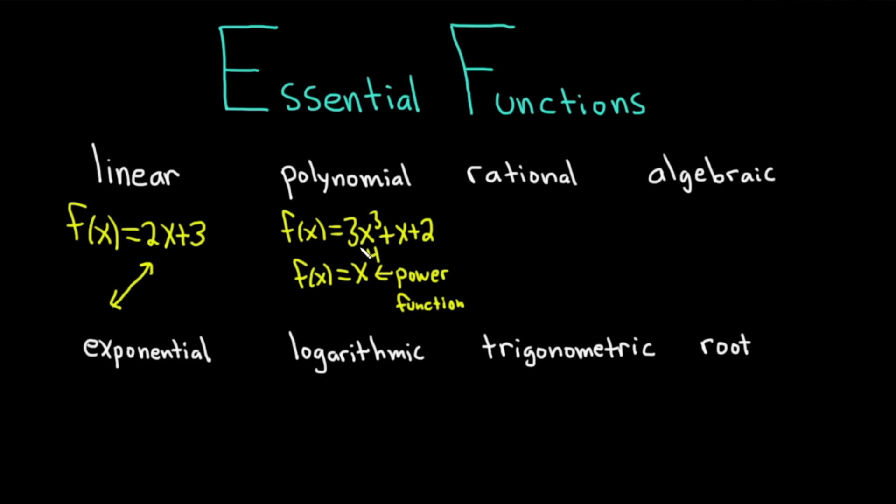In calculus, later on, we study infinite sums of polynomials, and those are really, really cool. Rational functions are basically fractions that you create with polynomials. So if you take a polynomial like x squared plus 1, and then you divide it by another polynomial like x squared plus 3, that's called a rational function.